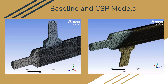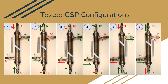Our fluid models: the baseline is to the left, showing a pretty dense mesh of about 2 million nodes. The one to the right is the CSP model, which has a much more dense mesh accounting for the non-circular tubes in between. Here are the different testing configurations that we used as our modeling guides.